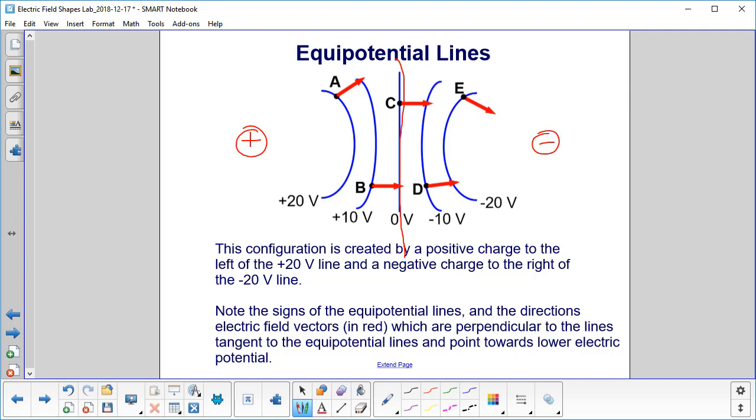And notice right in the middle there's zero volts. The voltage due to both charges cancels out there. Note the signs of the equipotential lines. They're negative near the negative charge and positive near the positive charge.